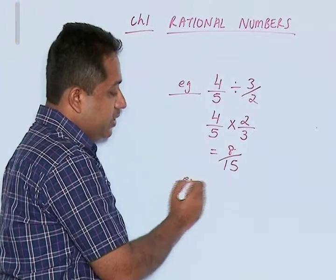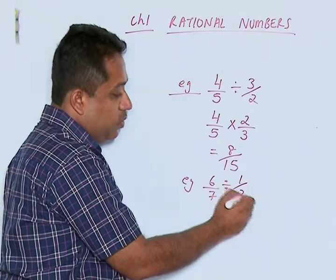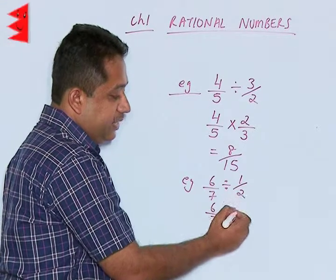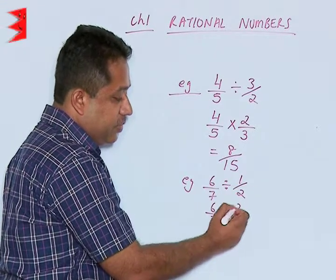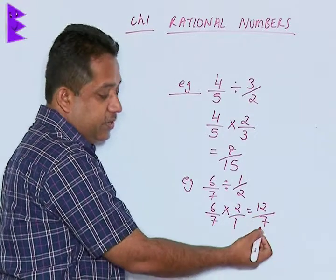Another example: 6 by 7 divided by 1 upon 2. Again, there is a division sign, so this is 6 by 7 into—we take the reciprocal of the second rational number—becomes 2 by 1. So the answer is 12 upon 7.